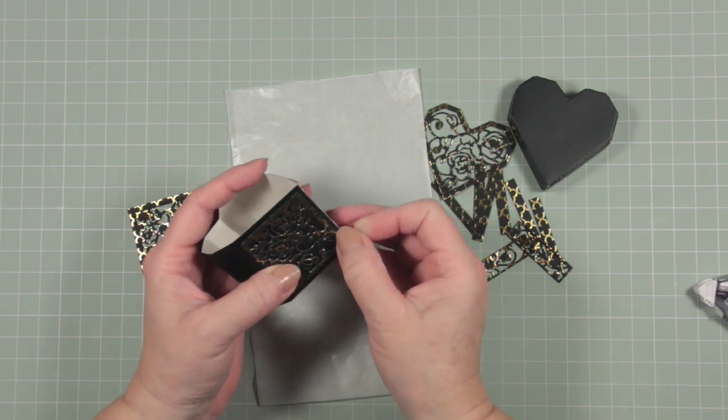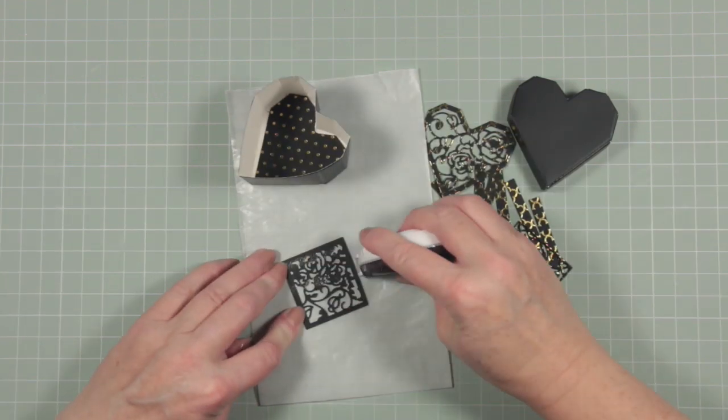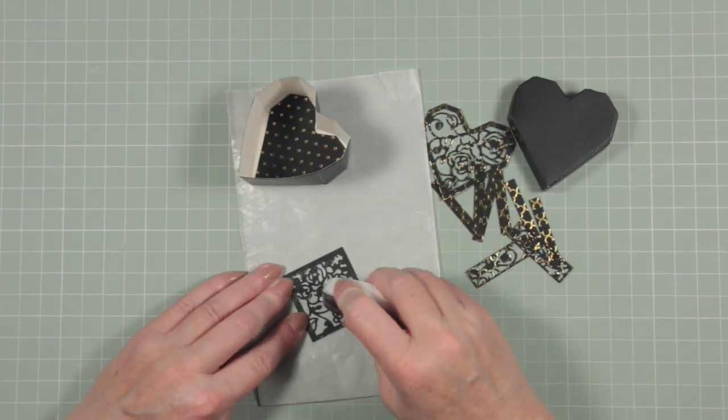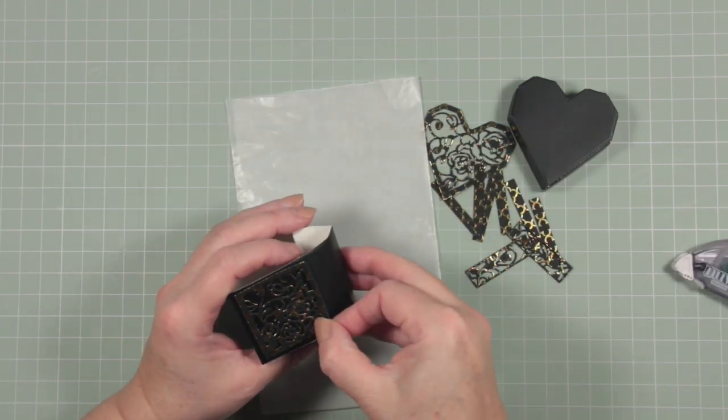These panels, incidentally, would be beautiful if you cut out four of them and formed them into a square on the front of a card. You could just add a little message.